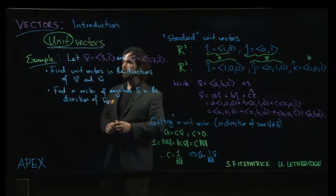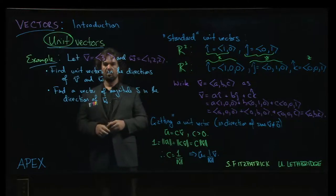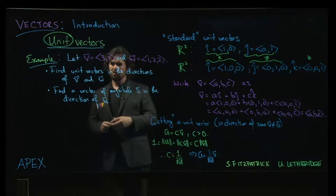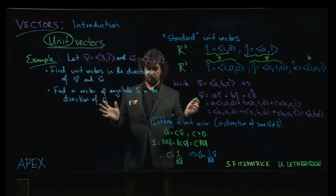Alright, so we're going to do another example, this time involving unit vectors. We're given two vectors here, v and w, and the first thing we want to do is find unit vectors in the directions of those vectors.